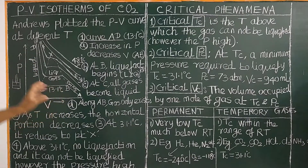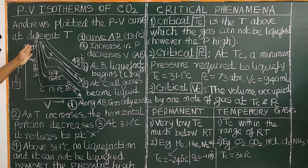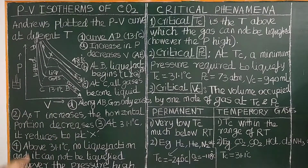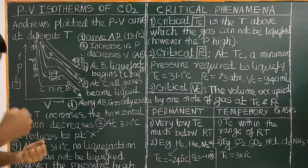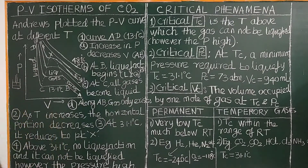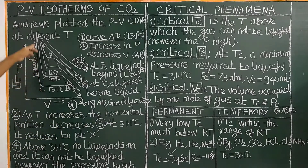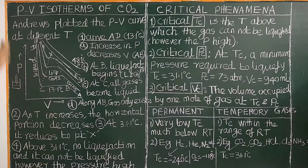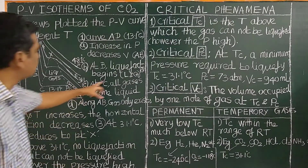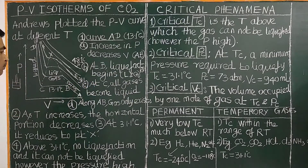Along curve C–D, only liquid is present. The curve is steep because liquids are incompressible. When you increase the pressure, there is no change in volume — only pressure increases while volume remains almost constant, because liquids are incompressible, whereas gases are compressible.